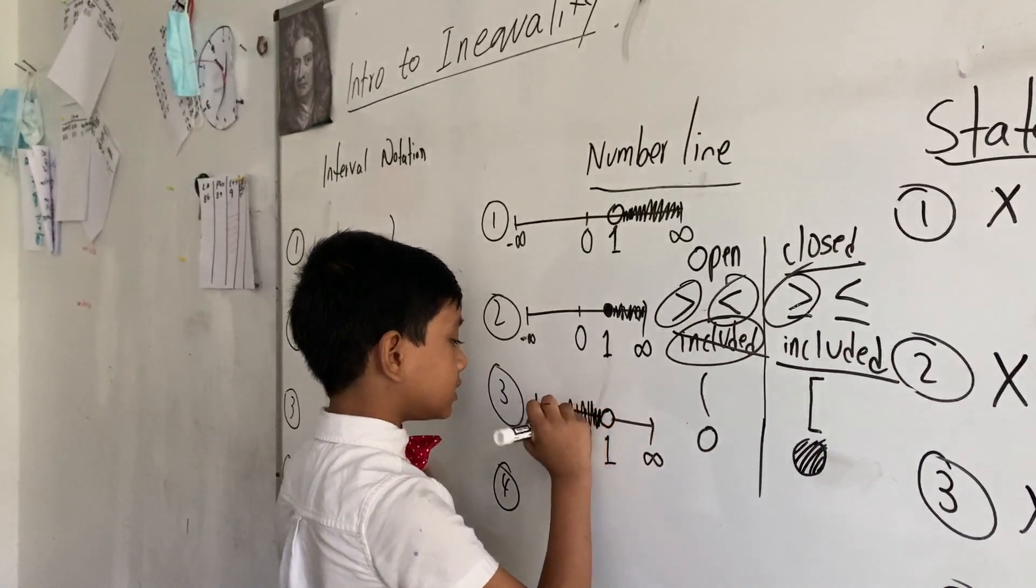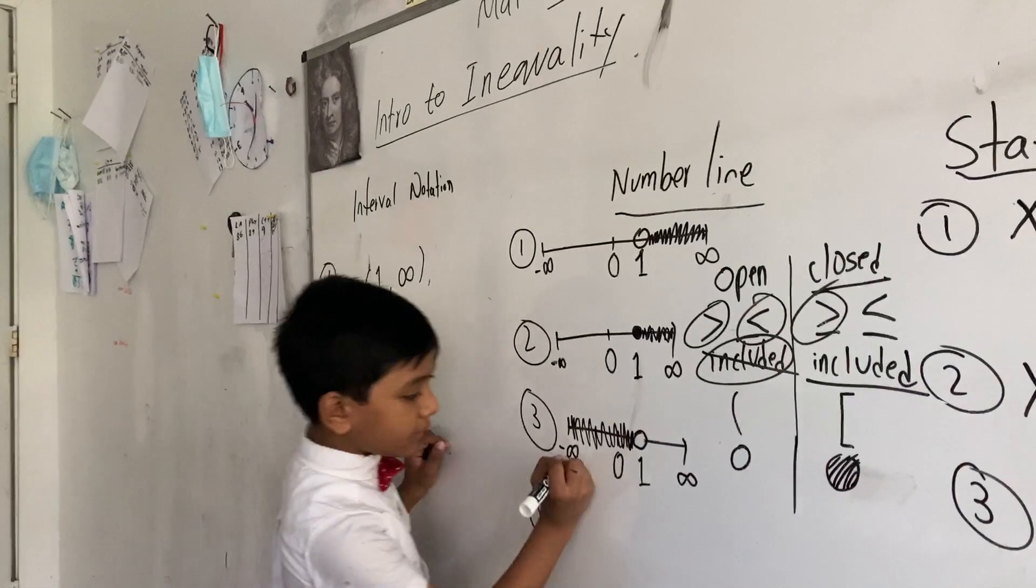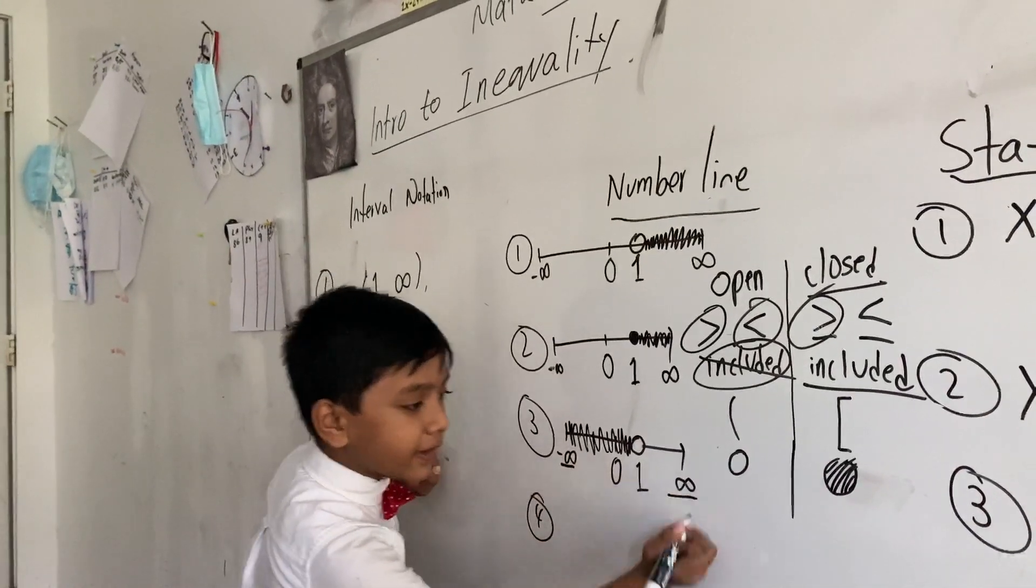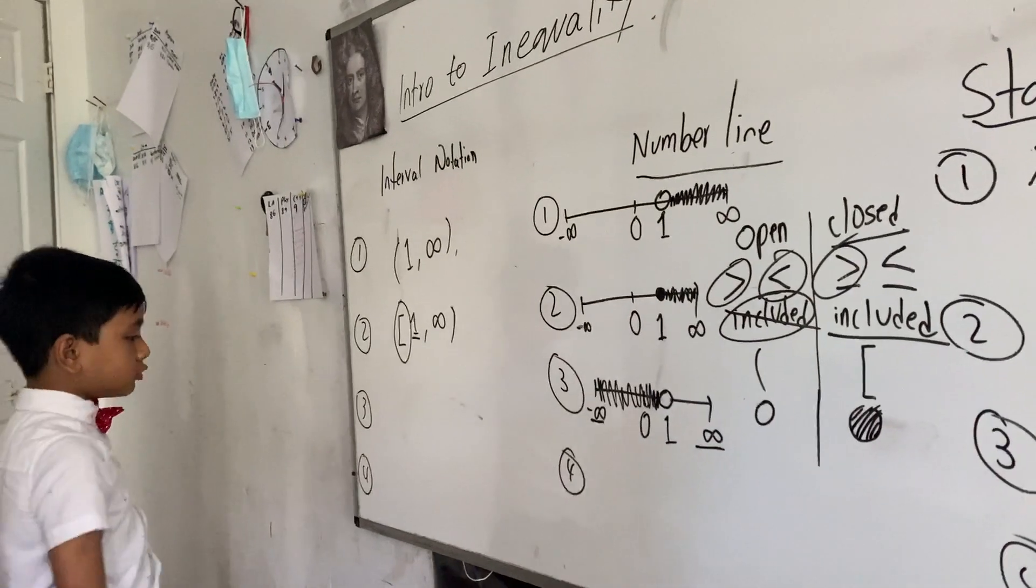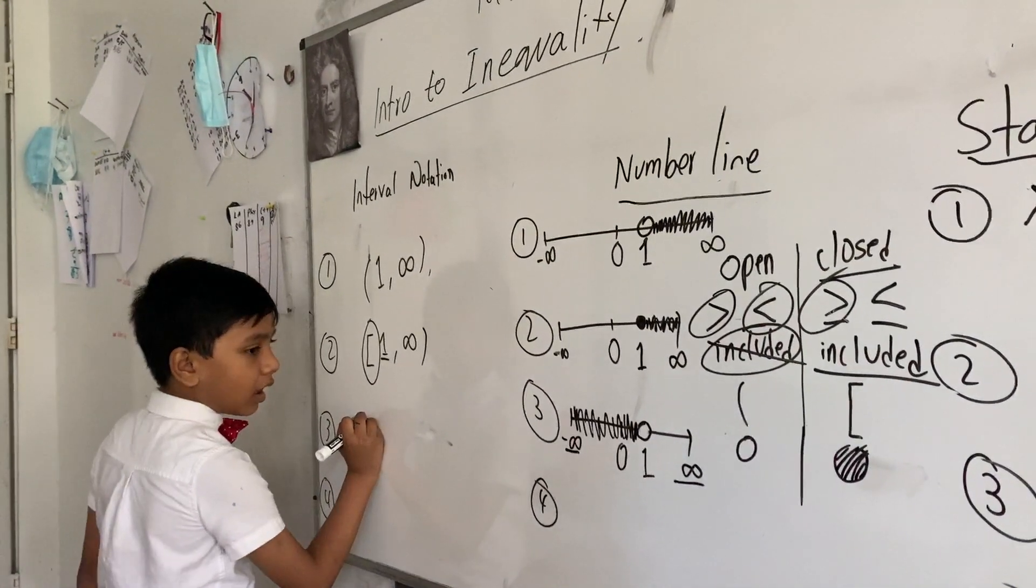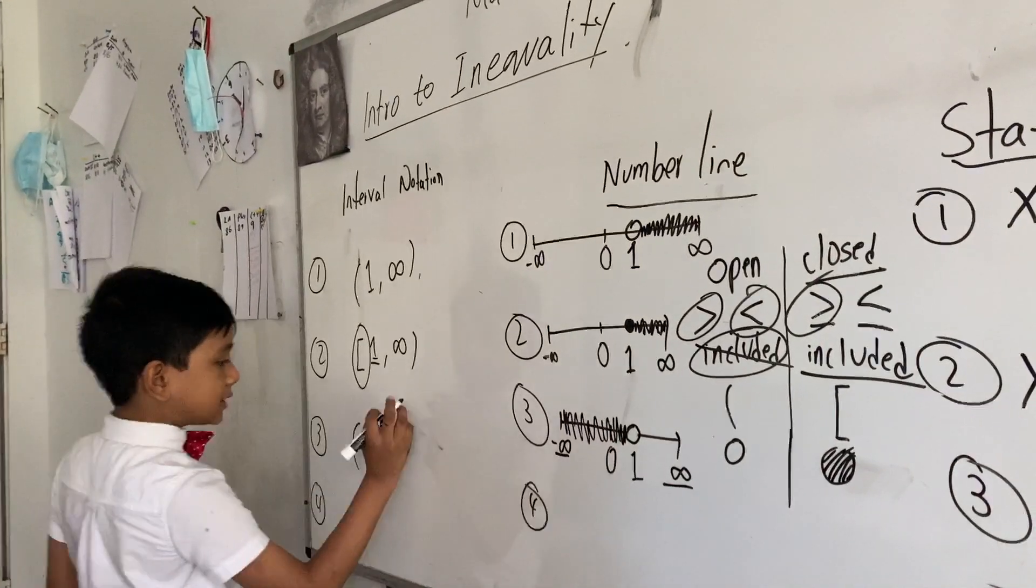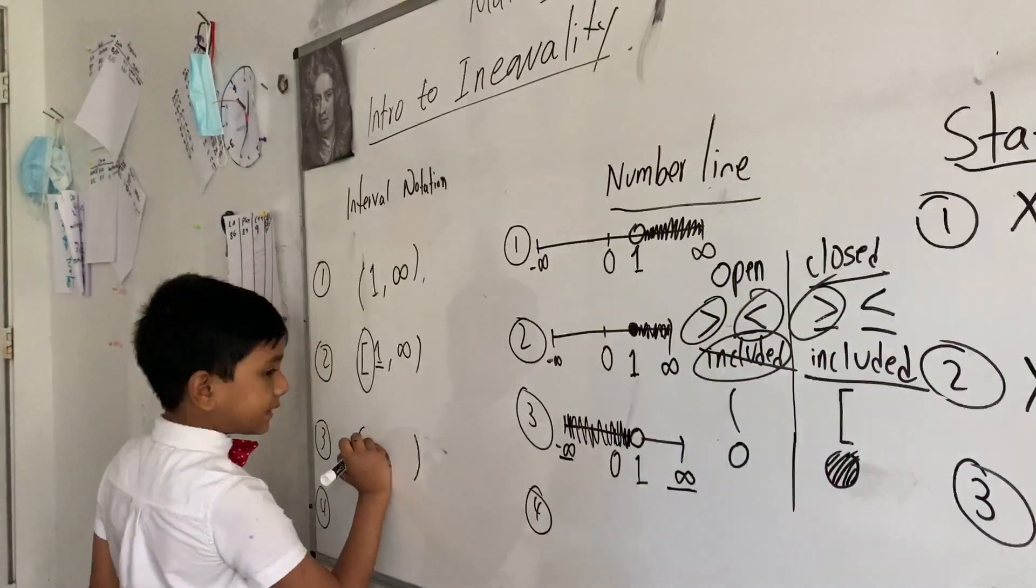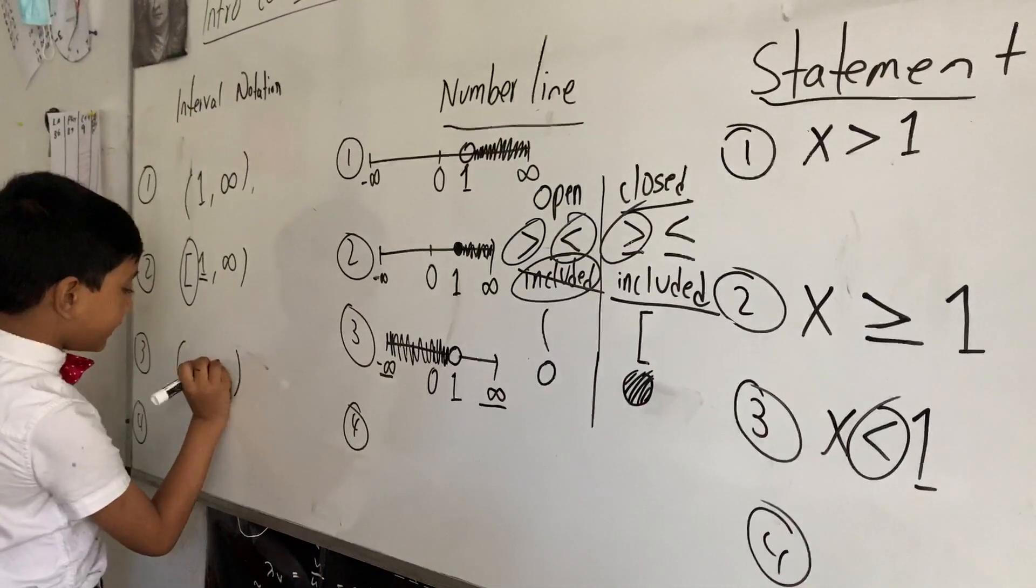So x lies somewhere in this range. If you remember, an infinity or a negative infinity is always open circle. It can never be closed circle. So we can put a parenthesis here. And since 1 is open circle, we can also put a parenthesis here, meaning that the range is negative infinity to 1.